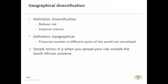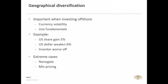Geographical diversification is the practice of diversifying an investment portfolio across different geographic regions so as to reduce overall risk and improve returns. Geographical diversification is based on the premise that financial markets in different parts of the world may not be highly correlated. For example, if US and European markets are declining due to recession, an investor may allocate part of their portfolio to emerging economies with higher growth rates such as China, Brazil, or South Africa.